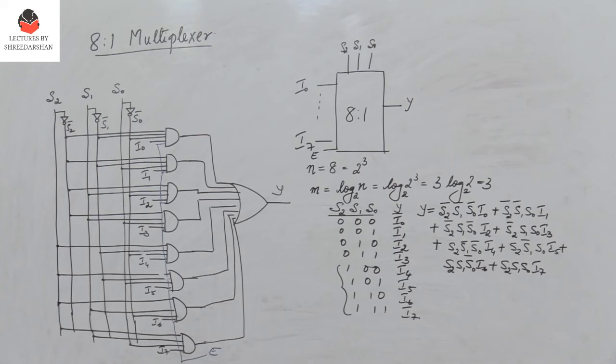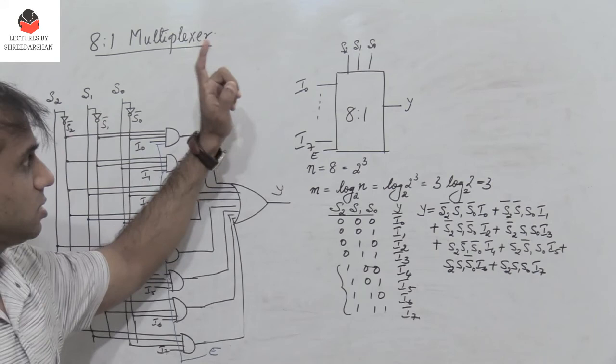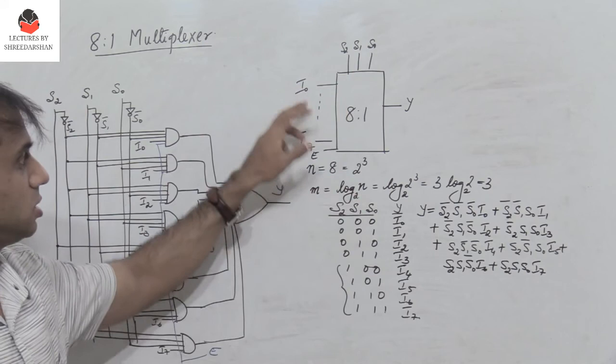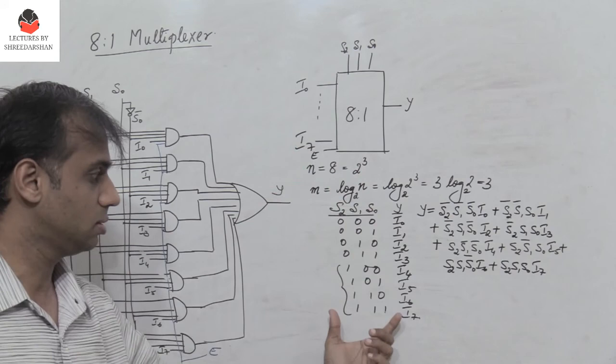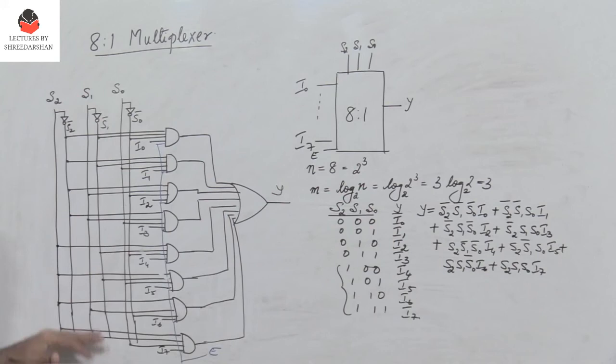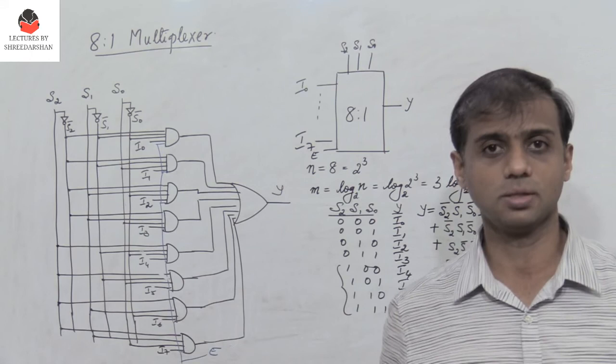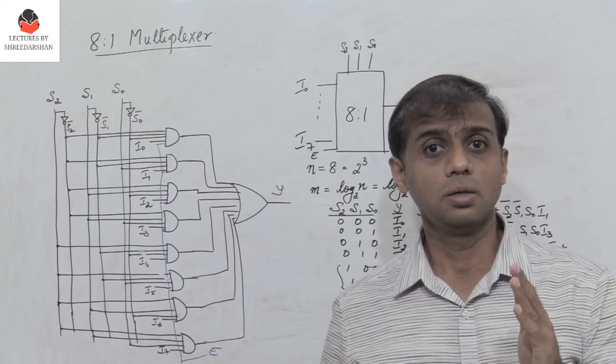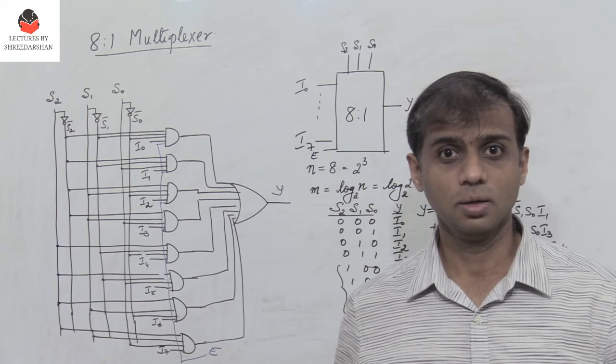This is how we can design an 8-to-1 multiplexer. Remember that based on the number of inputs, we select the number of select lines, defined by log n to base 2. Since we have 8 inputs, we need 3 select lines. We write the truth table, derive the Boolean expression, and then design the circuit. In the next video segment, we will see how to design an 8-to-1 multiplexer using 4-to-1 and 2-to-1 multiplexers. Please like, share, subscribe, and press the bell icon for notifications.